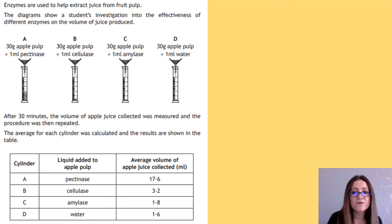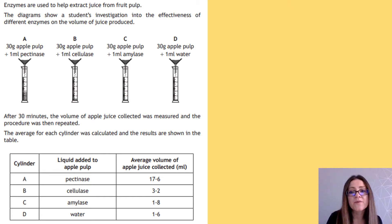When you look at one of these exam questions they can be quite overwhelming - there's a lot of information, there are diagrams, there's text to read, and normally a table of results as well. You need to filter that information, and the most important thing you need to do at the start is identify your aim. From the aim, you'll be able to answer all the other questions.